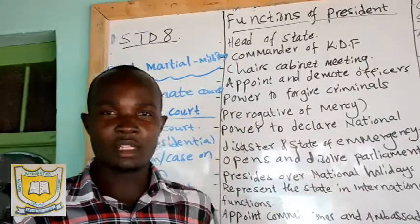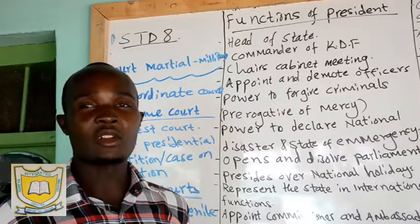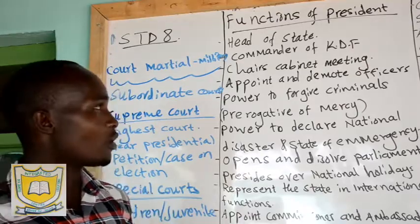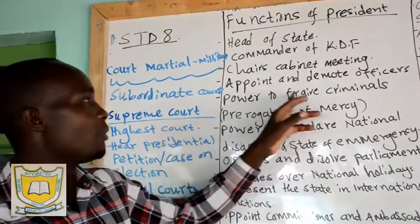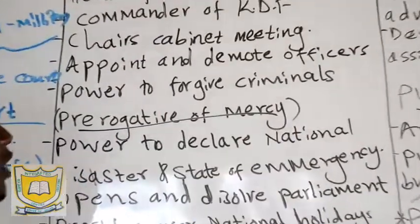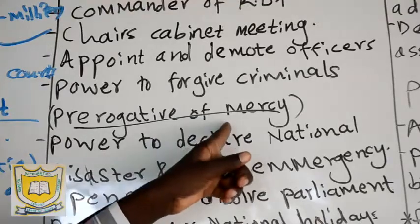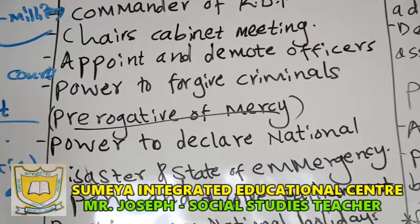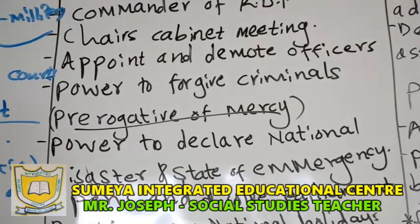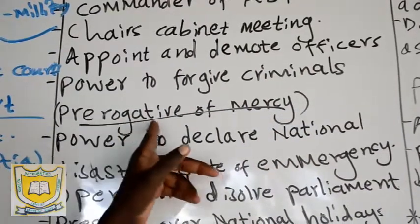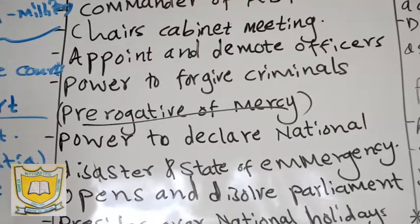He can also demote members who are not working well according to the constitution or the will of the people. Then he has the power to forgive criminals — we call it the prerogative of mercy. Some criminals in jail with petty crimes, those small mistakes that people have done that ended them up in jail, the president can one day decide to forgive these people. This we call the prerogative of mercy.